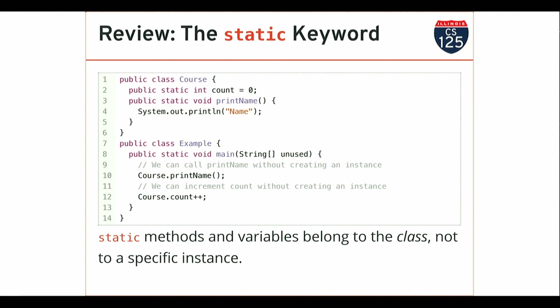If you don't mark something as static — whether it's a variable or a method — then each instance of a class has a separate copy of that variable, and each instance of the class can call that method. Instance methods defined on a class can access instance variables. That's how you can call length on a string and call it on five different instances and get five different results.